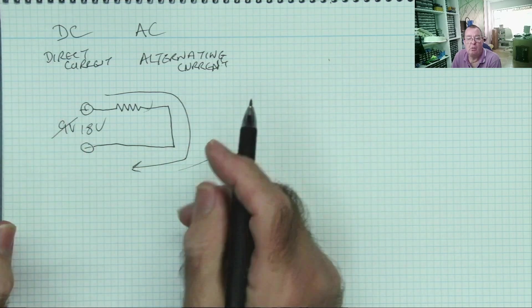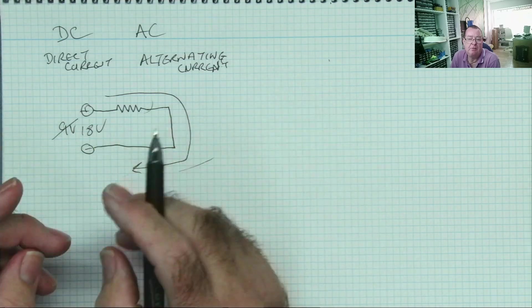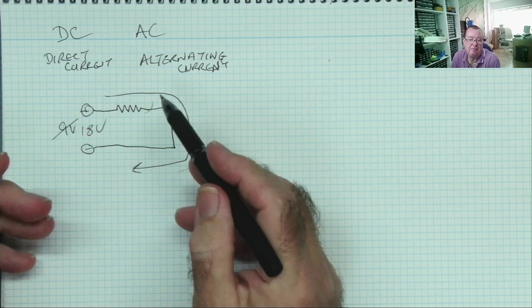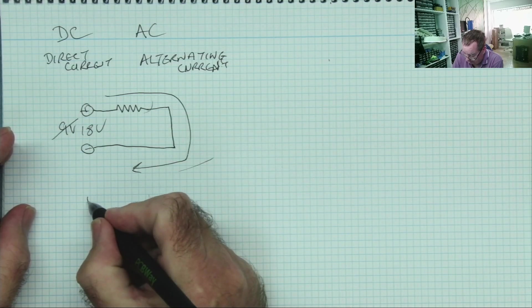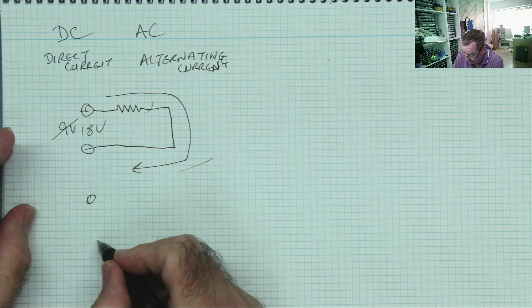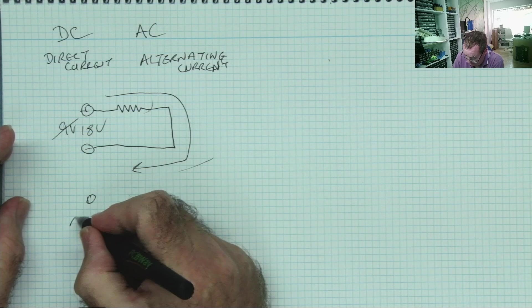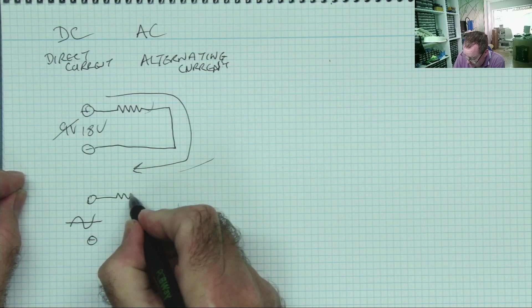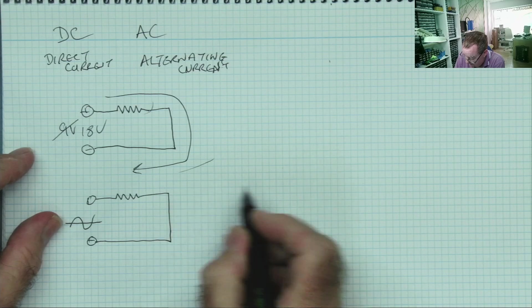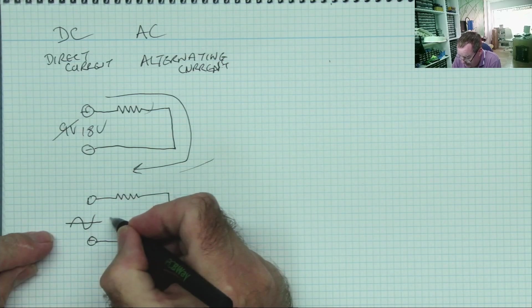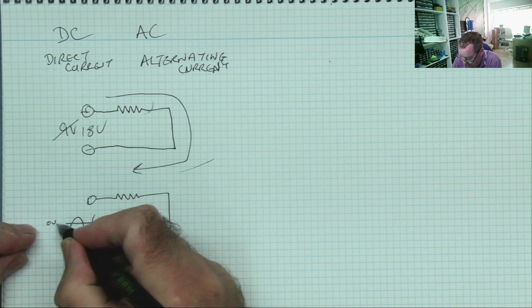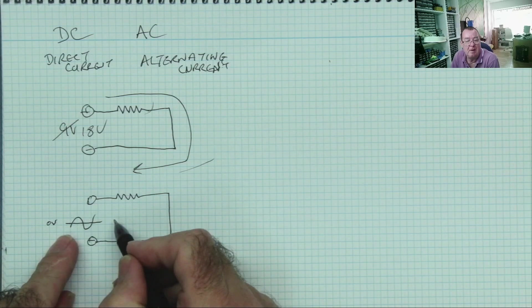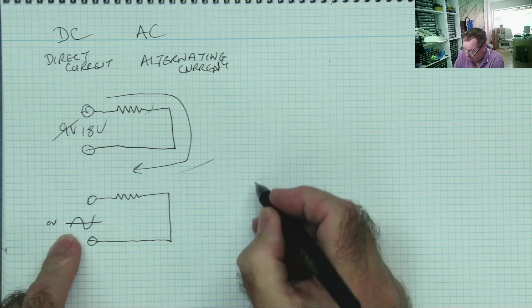So how do we get alternating current? How do we get current flowing backwards and forwards? Well, the only way we can really get that is by having an alternating voltage. So with AC, the voltage itself is actually alternating. Here's the symbol for alternating current, by the way. We'll talk about that in a minute. But we have the same sort of circuit. And with AC, this line in the middle, this represents 0 volts. So at this point, the voltage is 0. This is a graph and it's plotted against time.